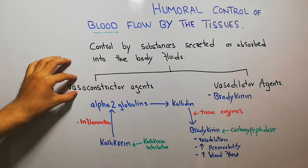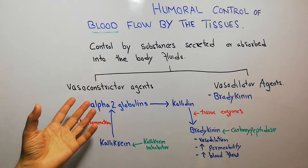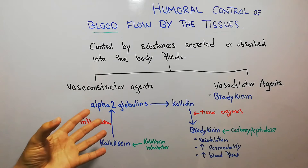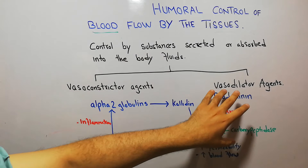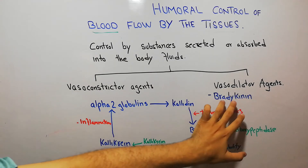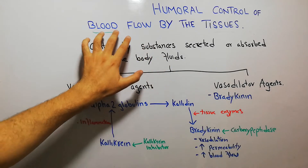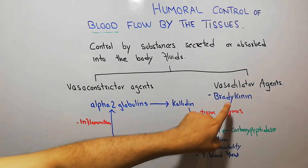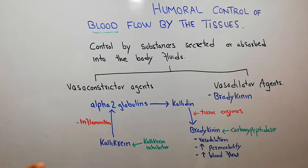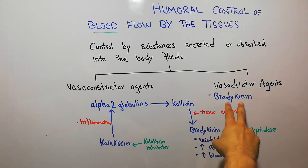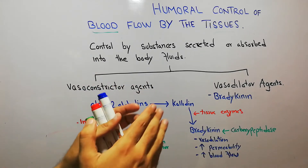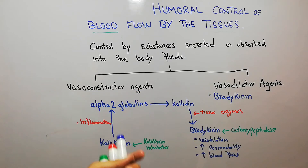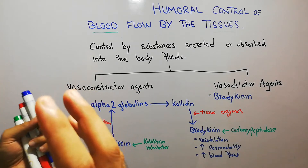We have previously discussed vasoconstrictor agents in detail — epinephrine, norepinephrine, angiotensin 2, vasopressin, and endothelin — and now we are starting with vasodilator agents. The most important vasodilator agent that helps in blood flow control to the tissues is bradykinin. Bradykinin belongs to a group of agents known as kinins, which cause dilation of the blood vessels, thereby increasing blood flow.